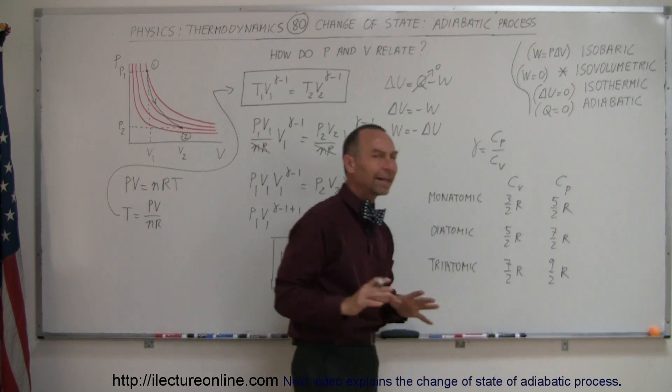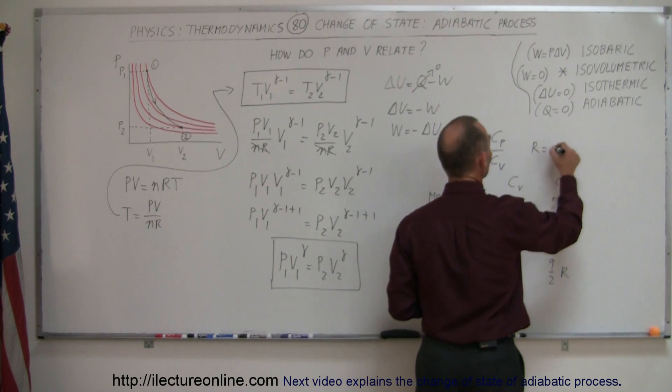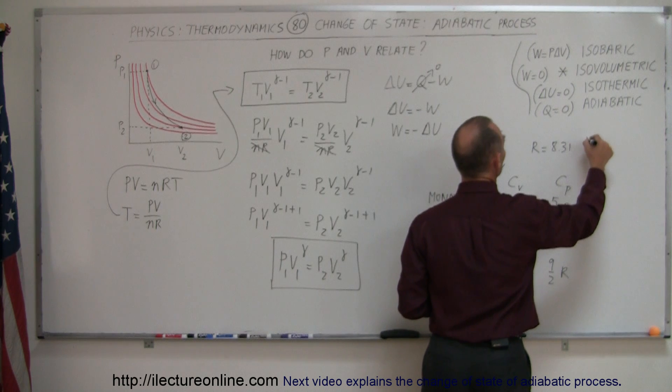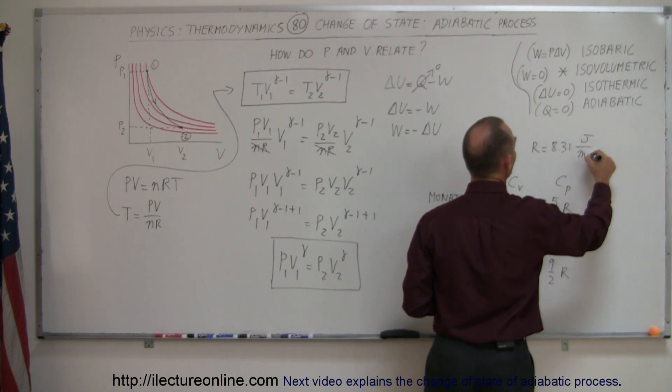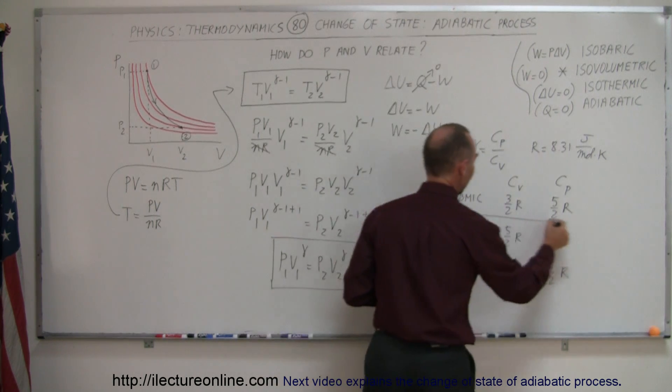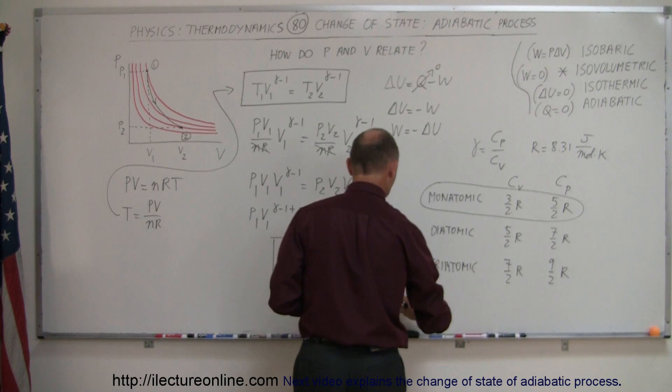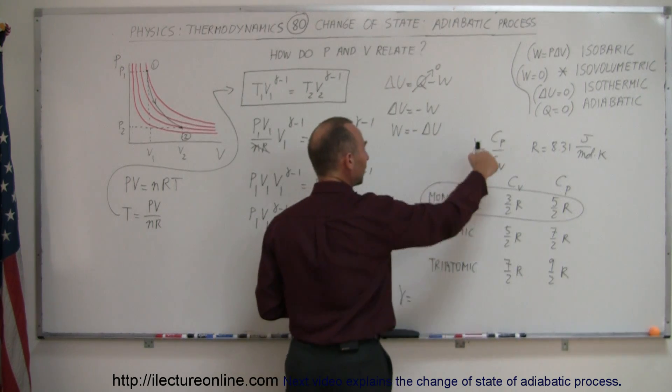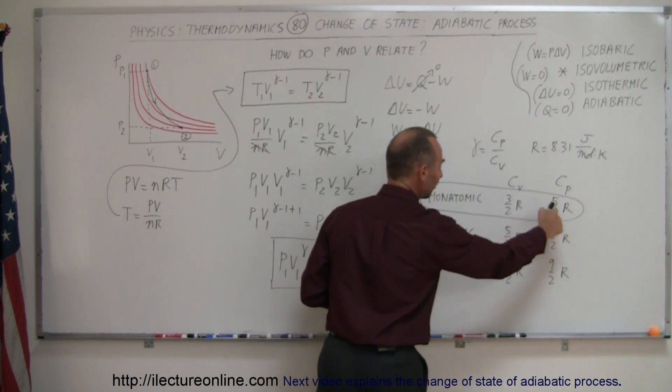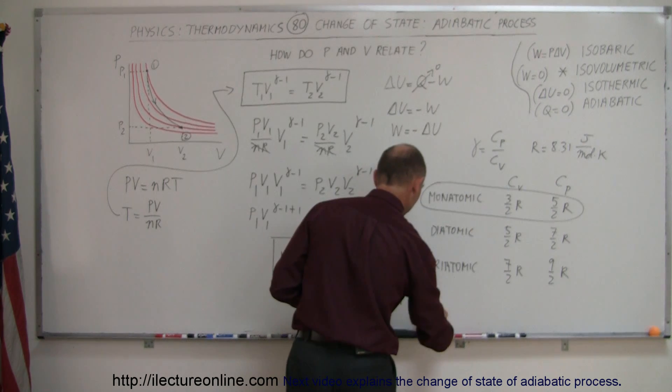These are approximate values. If you don't remember, r is equal to 8.31 joules per mole times kelvin. For example, if we take a monatomic gas and want to calculate the gamma, that would be c sub p divided by c sub v, which is 5 over 2 r divided by 3 over 2 r.